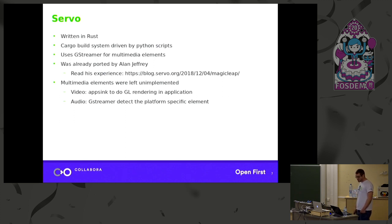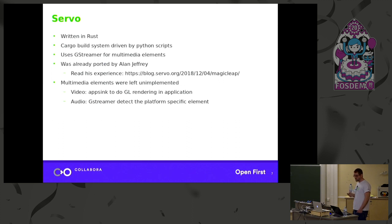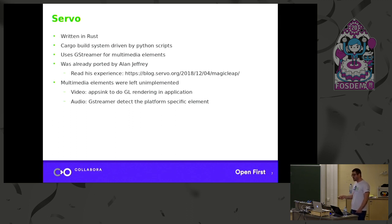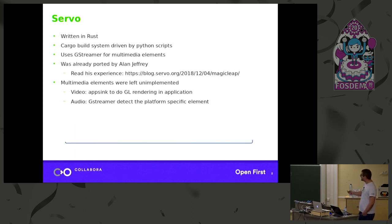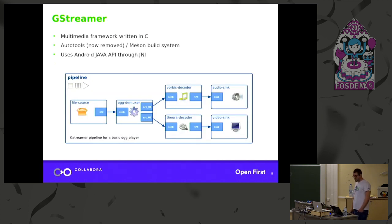For video they are using app-sync, meaning they don't let GStreamer render the video — they get the frames out of GStreamer and render them themselves in their application. For audio it's the opposite: they let GStreamer do everything itself. GStreamer is supposed to detect the platform and plug in the right audio sink. Of course there is no audio sink for Magic Leap yet — GStreamer is a multimedia framework written in C.